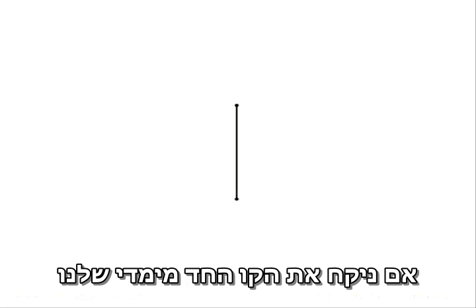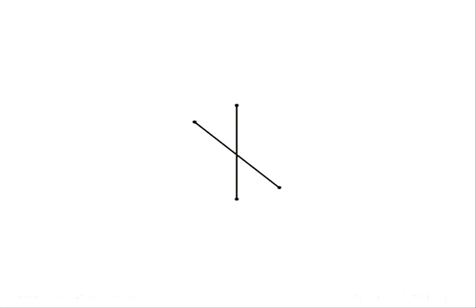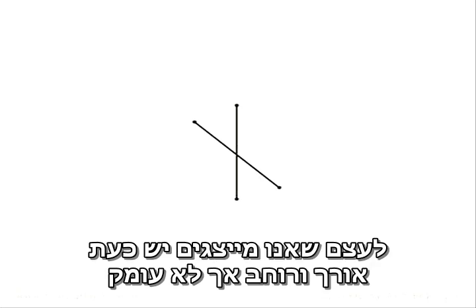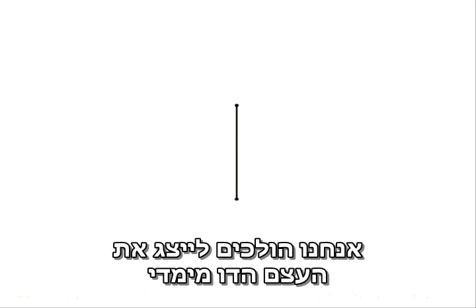If we now take our first dimensional line and draw a second line crossing the first, we've entered the second dimension. The object we're representing now has a length and a width, but no depth. We're going to represent our second dimensional object as being created using a second line which branches off from the first.